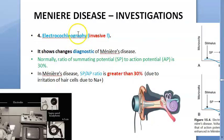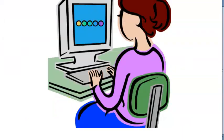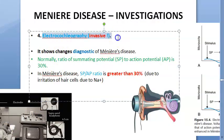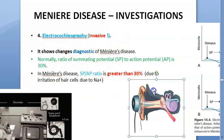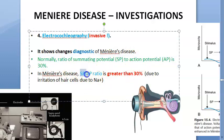Electrocochleography (ECochG) is an invasive procedure used in Meniere's disease investigations. It shows diagnostic changes specific to Meniere's disease. Normally the summation potential to action potential (SP/AP) ratio is 30%. In Meniere's disease, the SP/AP ratio is greater than 30%, due to irritation of hair cells by sodium.